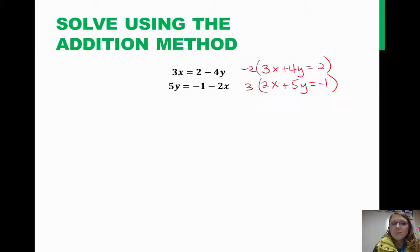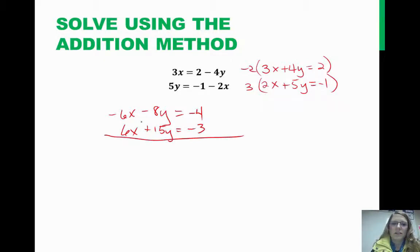I'm going to rewrite this. Negative 2 times 3 is a negative 6x. Negative 2 times 4 is a negative 8y. And then we have negative 2 times 2 is negative 4. Then let's take 3 times 2, which would be 6x. 3 times 5 is 15y. And 3 times negative 1 is negative 3. So, notice that these 6's now will totally disappear. 15 plus a negative 8 is 7y, and then negative 4 plus negative 3 is negative 7. We can divide both sides by 7, and we have y equals negative 1.